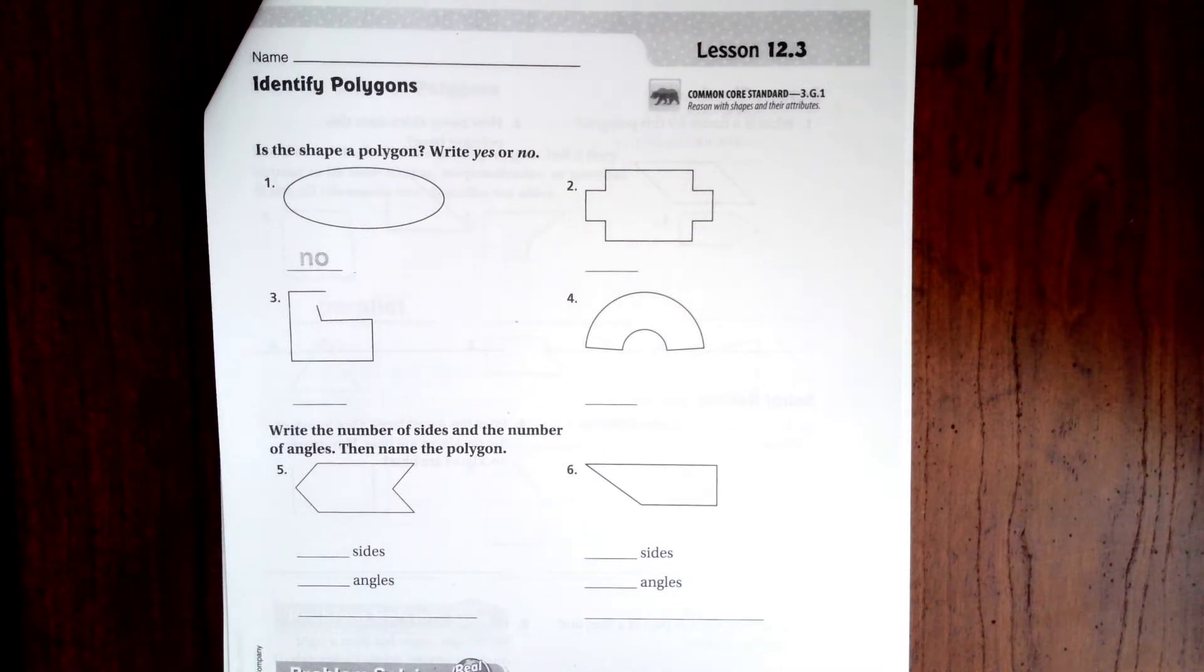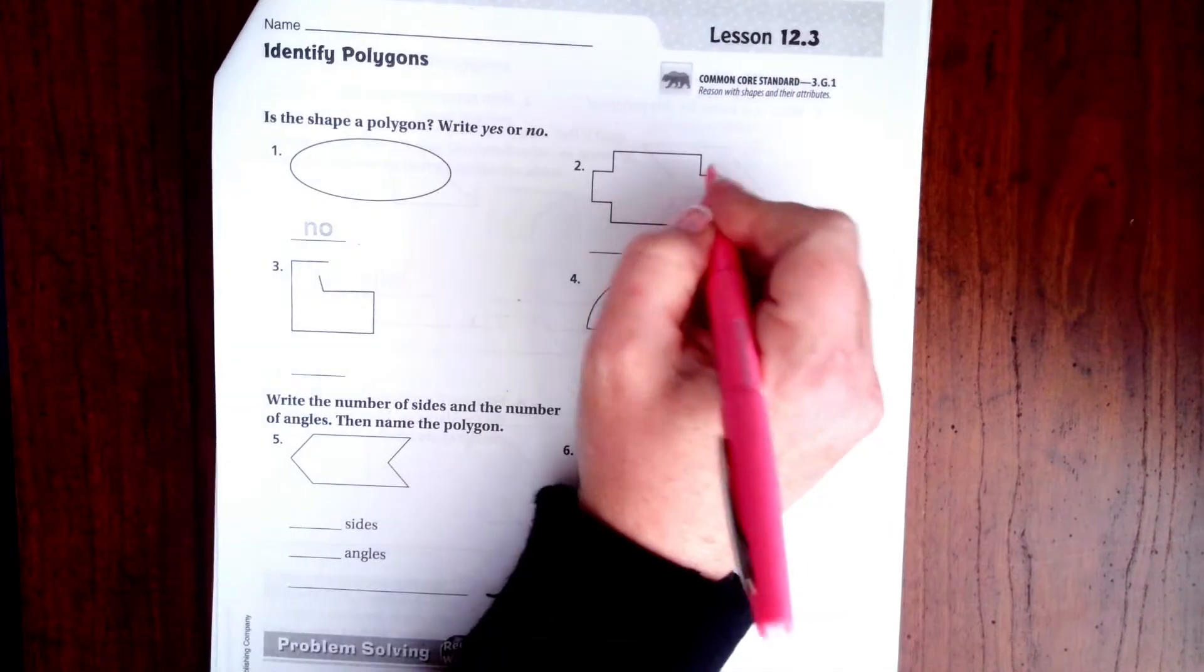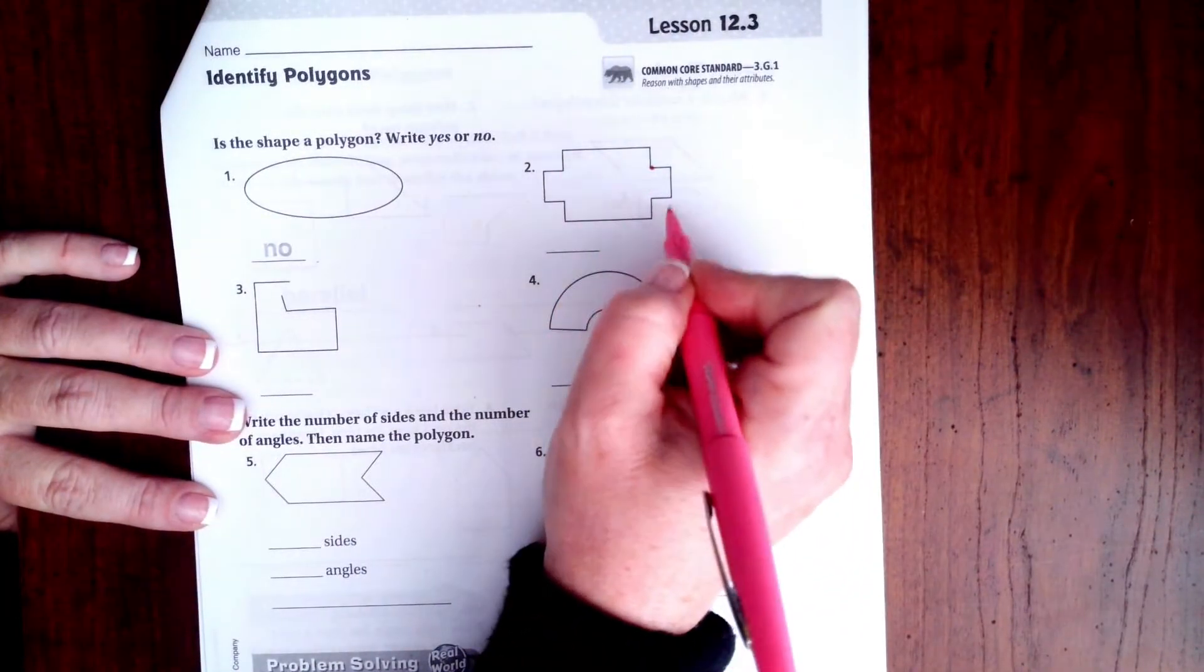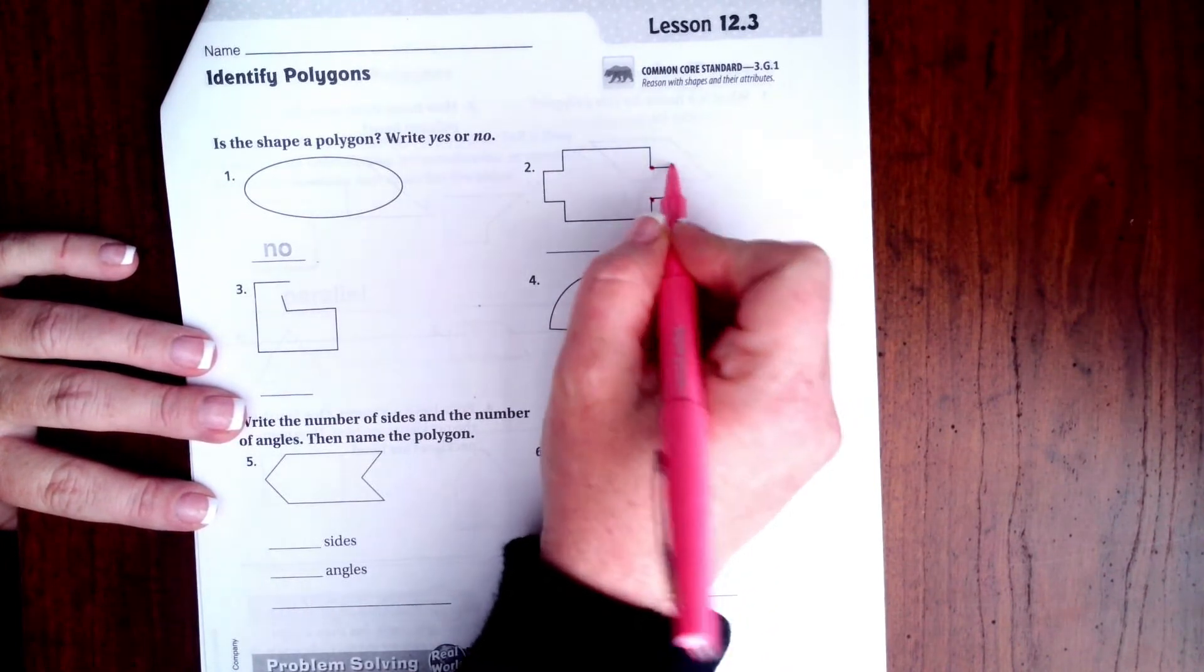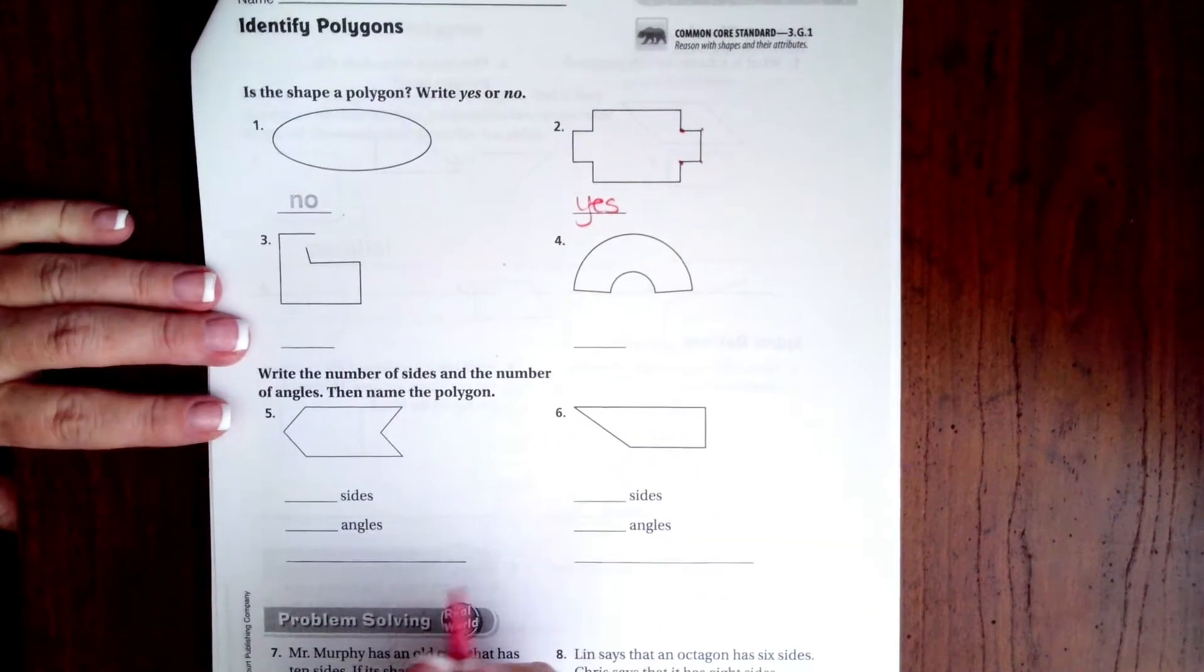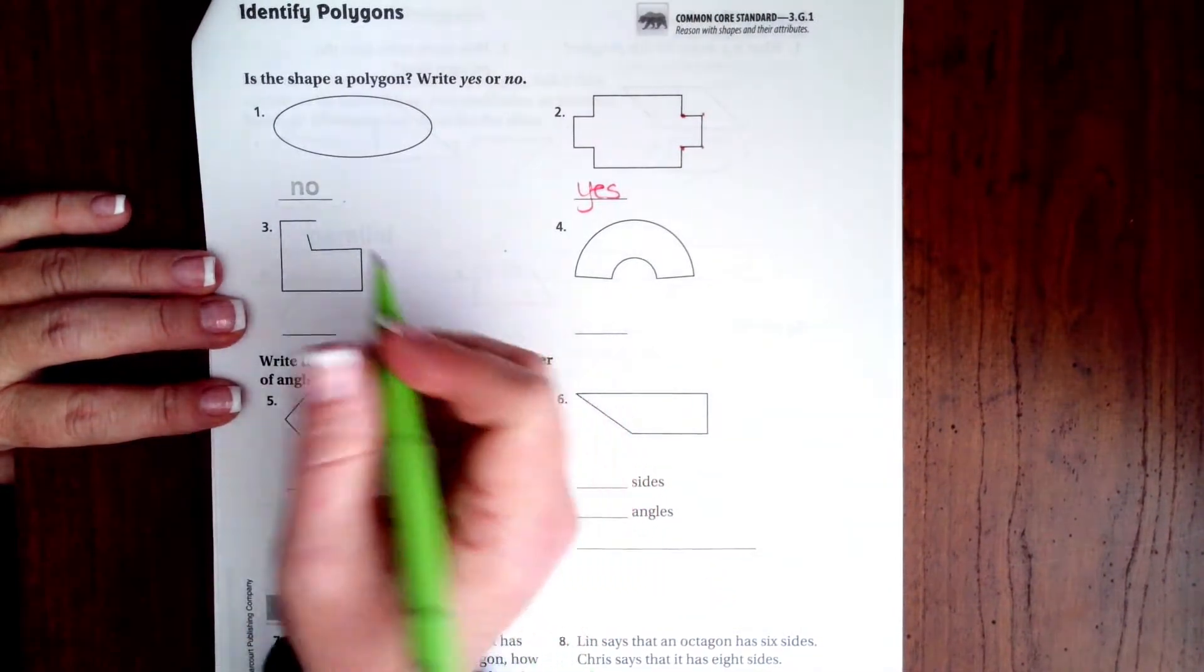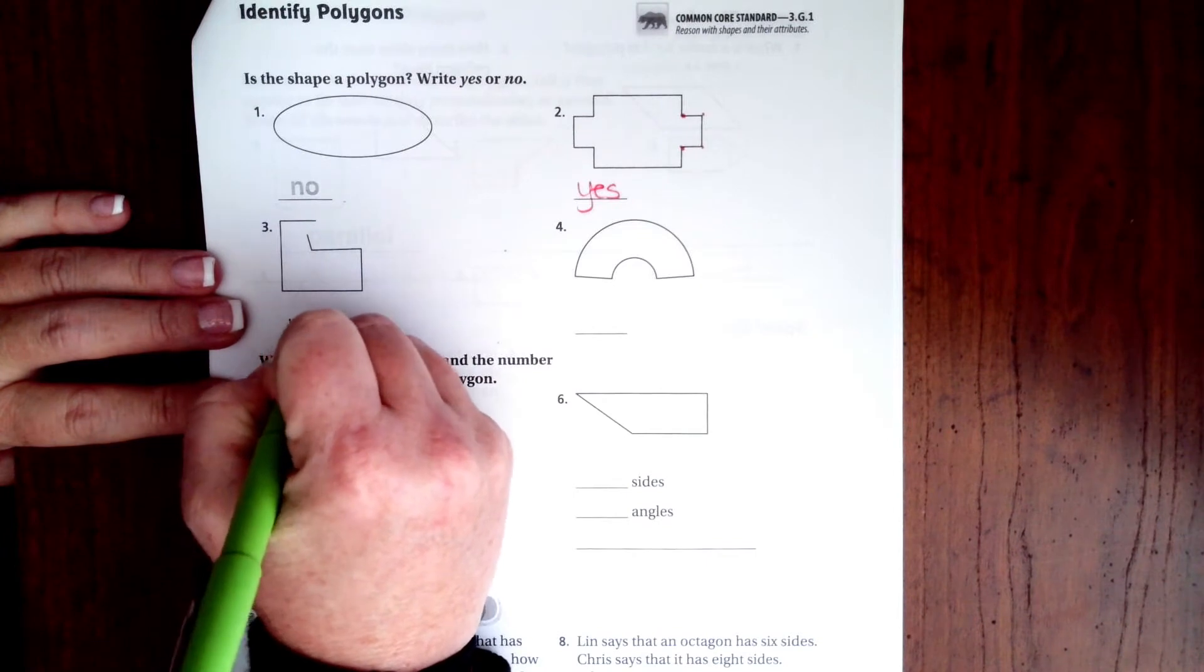So like right here, this one has multiple sides and they meet and intersect at all of their points, so this one is yes. Now you just heard me say that a polygon has to be a closed shape. That is open right there, that is a no.